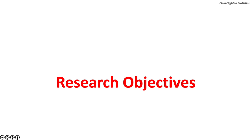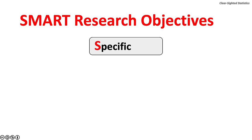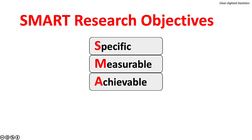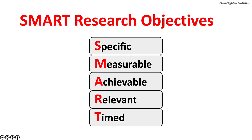Let's turn to research objectives. Research objectives must be SMART. The S stands for specific, which means that the research goals must be clearly defined. The M stands for measurable, which means that the goals have clear measures from which the results can be judged. The A stands for achievable, which means the research goals can be accomplished. The R stands for relevant, which means the research goals are directed to solving an important problem. And T stands for timed, which means the research objectives state when the research will be finished.